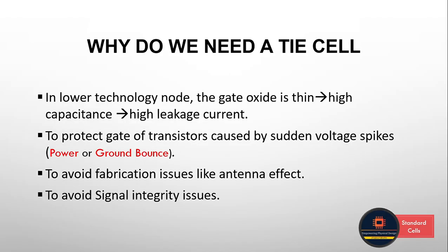First, we need to understand why we need a Tie Cell. In lower technology nodes, as technology nodes shrink, the gate oxide thickness also needs to be reduced to maintain performance scaling. A thinner gate oxide creates a stronger electric field between the gate and the channel, allowing better current flow through the channel, which is essential for small transistors. However, the capacitance of a capacitor is inversely proportional to the thickness of the dielectric material — in our case, the gate oxide. So a thinner gate oxide leads to higher capacitance and increased leakage current.